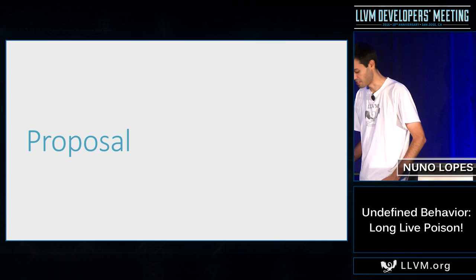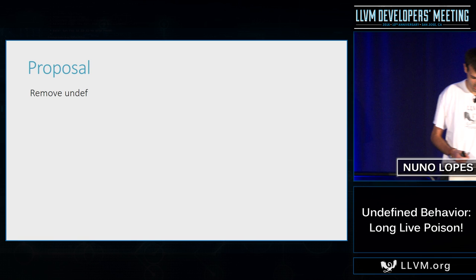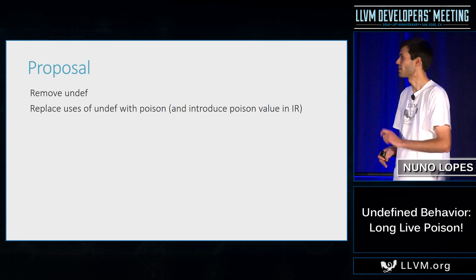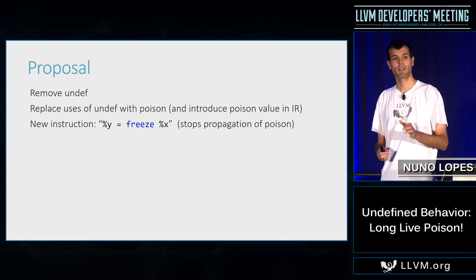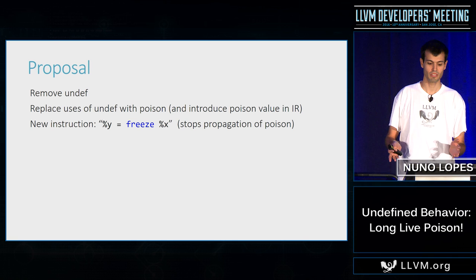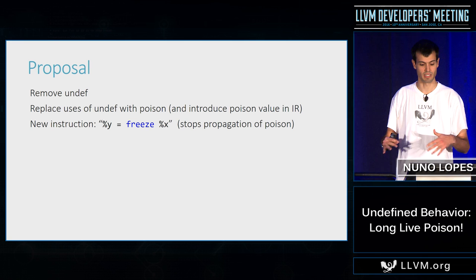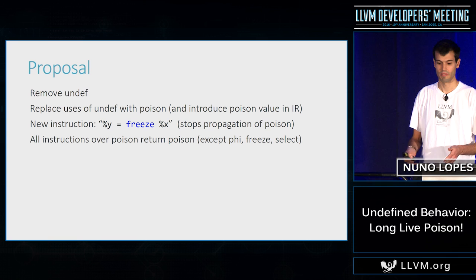We say that undef and poison don't work well together, so we just remove one of them — and we choose to remove undef. At the same time, we introduce a new poison value in the IR: in the same way you can write undef, you can now write poison. We also introduce a new instruction called freeze: when it takes a poison value, it returns a non-deterministic value, similar to the old undef, but all reads of the frozen value will return the same value. Most instructions taking poison return poison, except for freeze and select. Finally — the slightly controversial point — branch on poison would be undefined behavior.